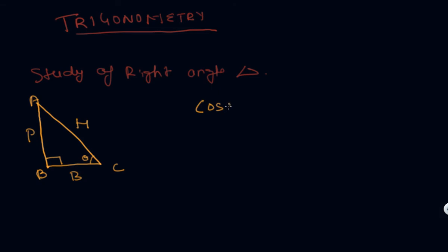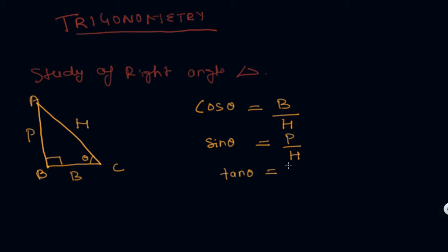In the 10th standard, we studied three basic relationships. One is cos theta, which is equal to base upon hypotenuse. Another one is sine theta, which is equal to perpendicular upon hypotenuse. And tan theta, which we already know, is perpendicular upon base.